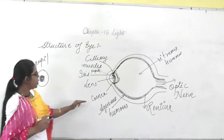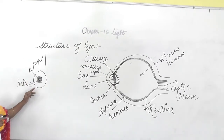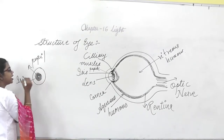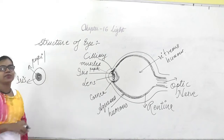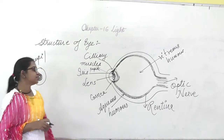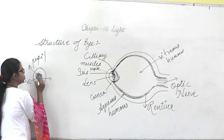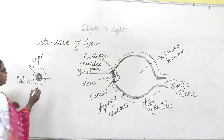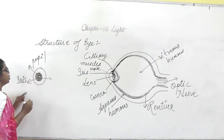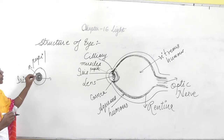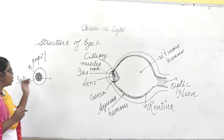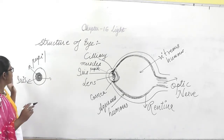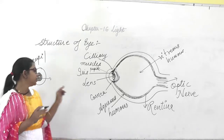Now let's look at the function of the cornea and iris. This colored part of the eye is known as the iris. As you have seen, many people have black eyes, green eyes, blue eyes, or brown eyes. This is due to the iris. When light rays fall on the iris, it appears green, blue, black, or brown, because the shades of the eyes depend upon the light of the object focusing on the pupil.